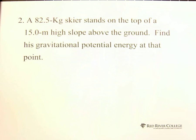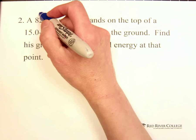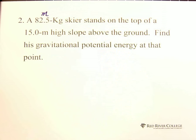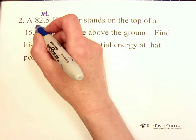A 82.5 kg skier stands on the top of 15 m high slope above the ground. We're given the mass is 82.5 kg. Stand on the top of 15 m high slope above the ground.